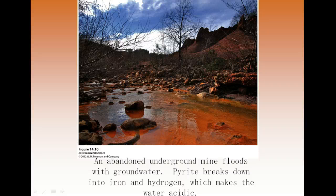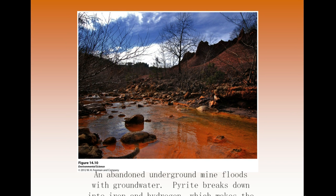In an abandoned underground mine, as mining proceeded the land started to subside or sink. Groundwater running along the top turns a rusty color from pyrite — iron sulfide (FeS₂). When pyrite mixes with water, it breaks down into iron and hydrogen, making the water more acidic. Mining has a great deal of influence on pollution.